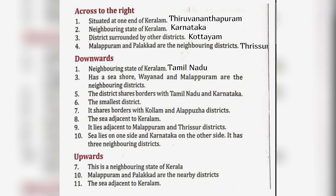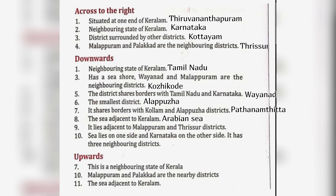Downwards: 1. Neighboring state of Kerala — Tamil Nadu. 3. Has a seashore; Wayanad and Malappuram are the neighboring districts — Kozhikode. 5. The district shares borders with Tamil Nadu and Karnataka — Wayanad. 6. The smallest district — Alappuzha. 7. It shares borders with Kollam and Alappuzha districts — Pathanamthitta. 8. The sea adjacent to Kerala — Arabian Sea. 9. It lies adjacent to Malappuram and Thrissur districts — Palakkad.